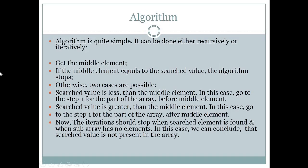In the pseudo-code, we get the middle element and check it. If the middle element equals the search value, the algorithm stops. Otherwise, two cases are possible: the search value is less than the middle element, in which case we go to step one for the lower part of the array.